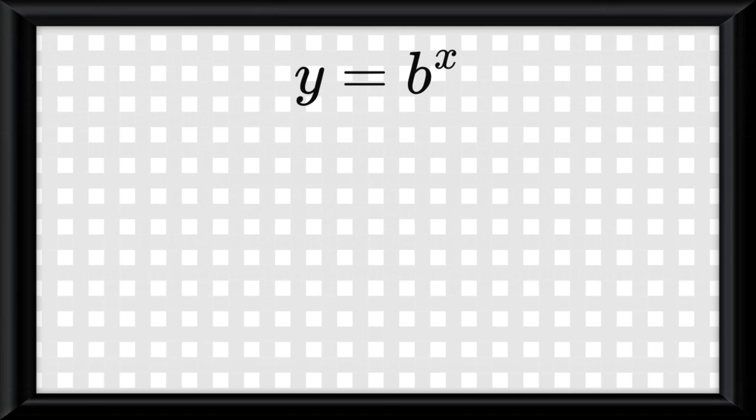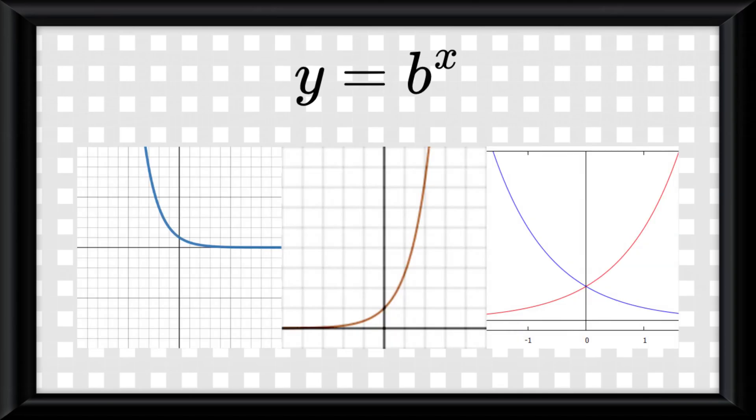And for these parent functions, we can see some fun things. First is that no matter what, there will always be a point at 0 comma 1, because anything to the power of 0 is 1.